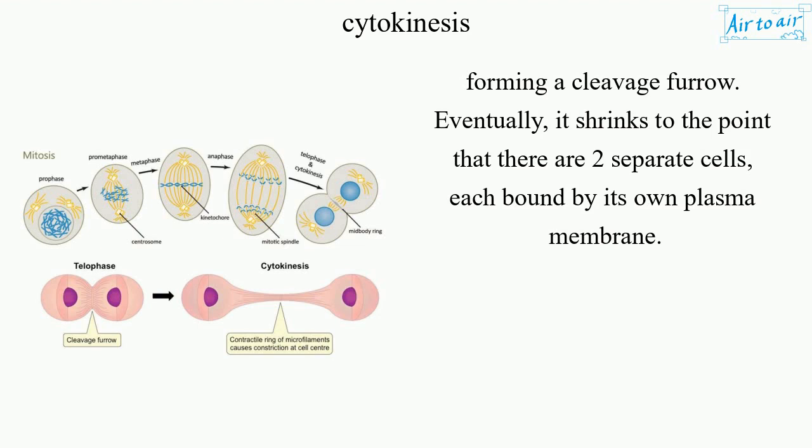Eventually, it shrinks to the point that there are two separate cells, each bound by its own plasma membrane.